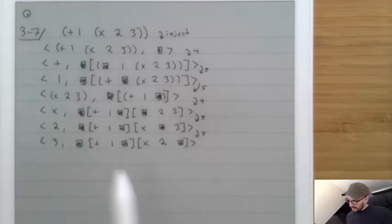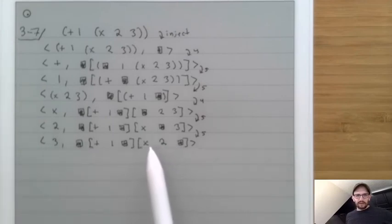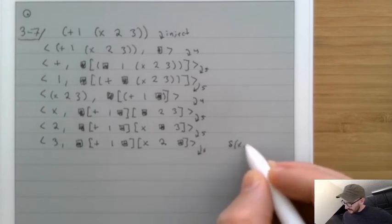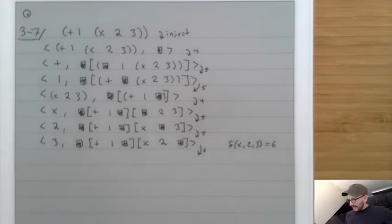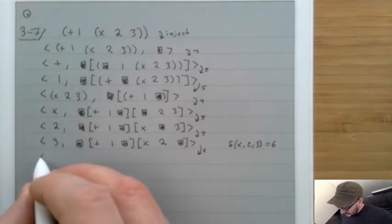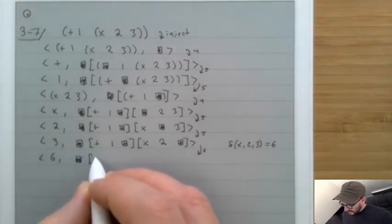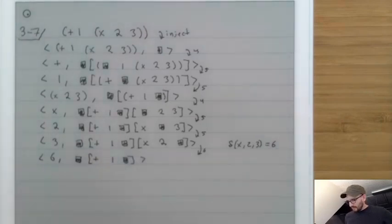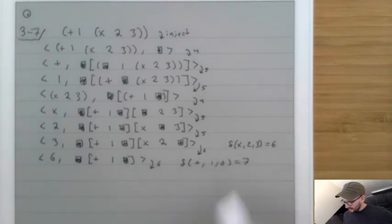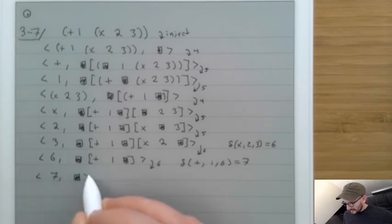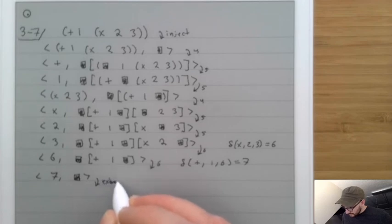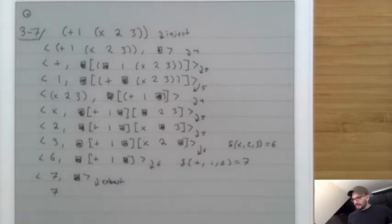After rule 6, we have (6, E[plus one hole]). Rule 6 again: context bottom is 'plus one hole', compute delta(plus, 1, 6) = 7. We get (7, hole). No rule applies any longer, so we call extract and get back 7. That's the CC0 machine running on 'plus one (times two three)'.